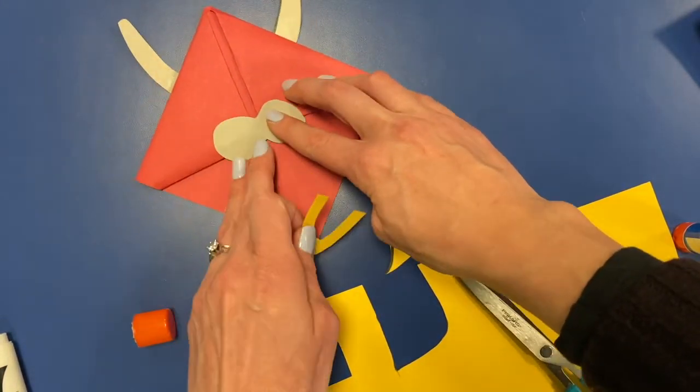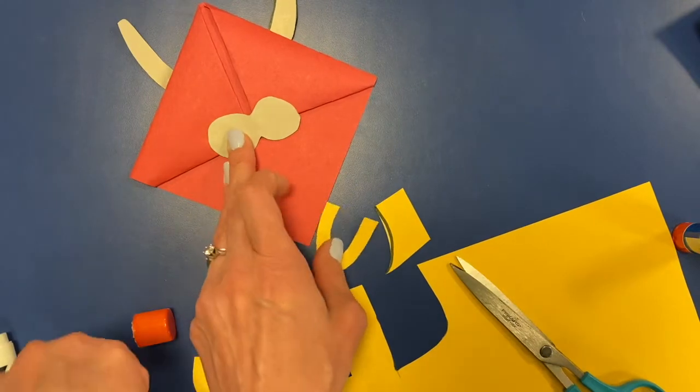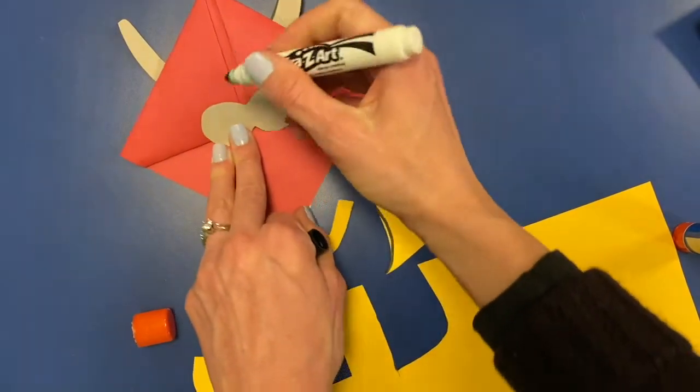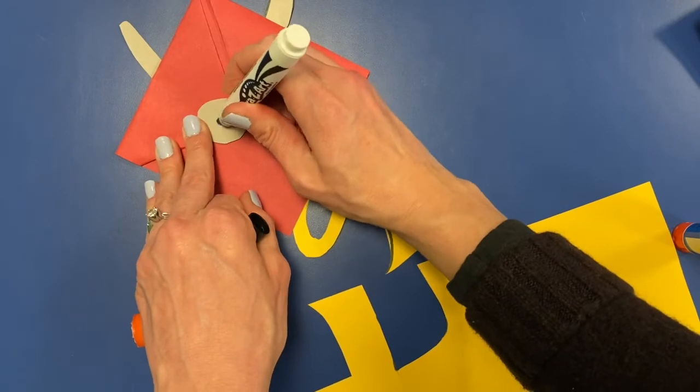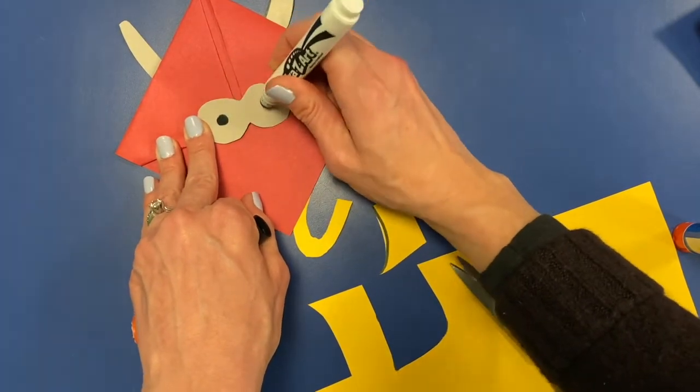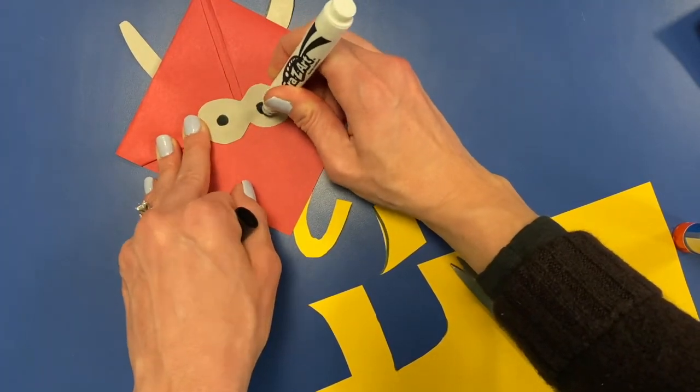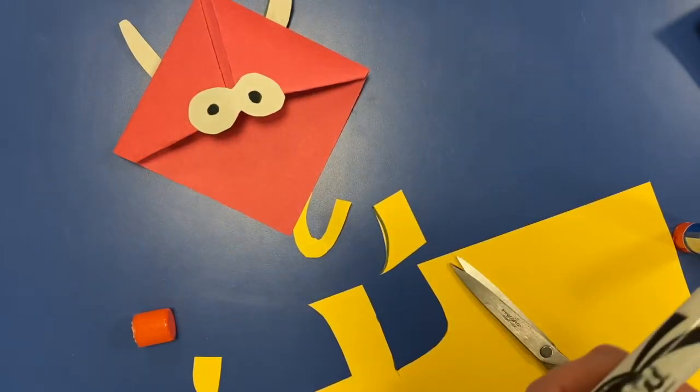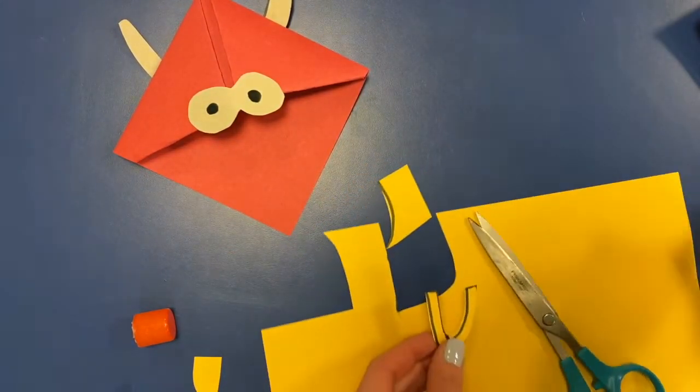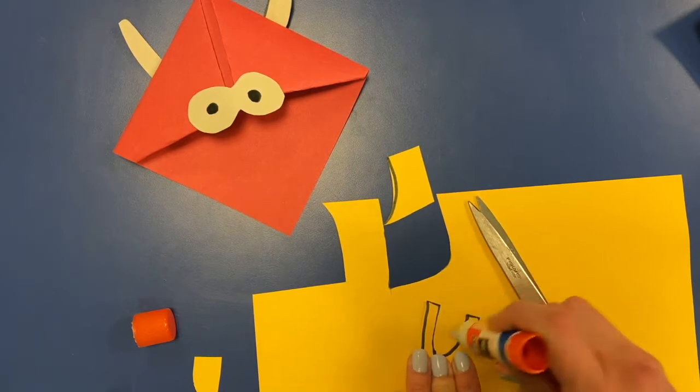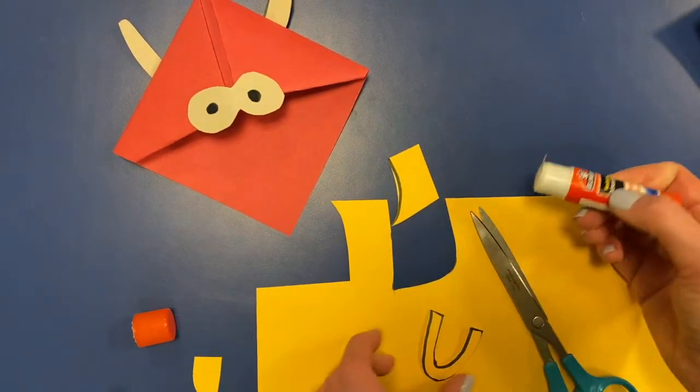So now we're going to draw two circles here on the nose for nostrils. We're gonna take our ring. We're gonna put some glue on the top of it and glue it to the nose.